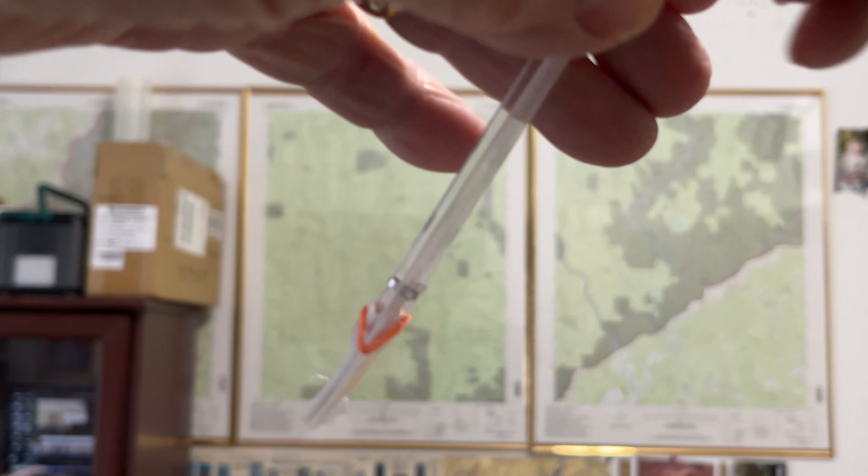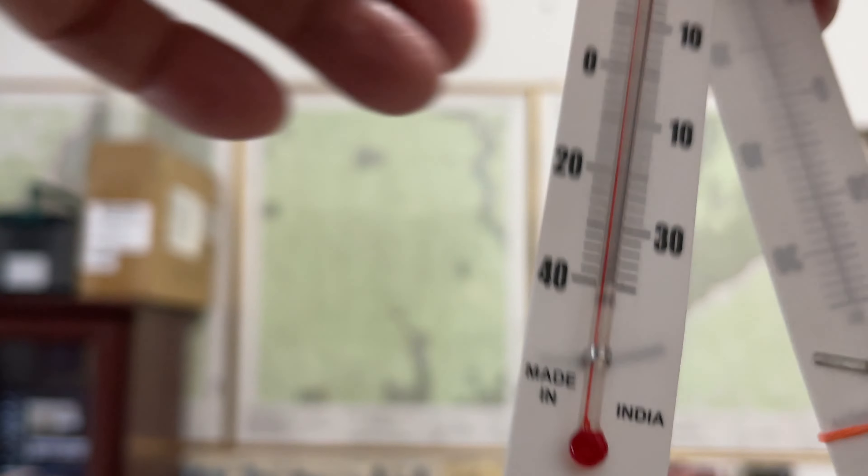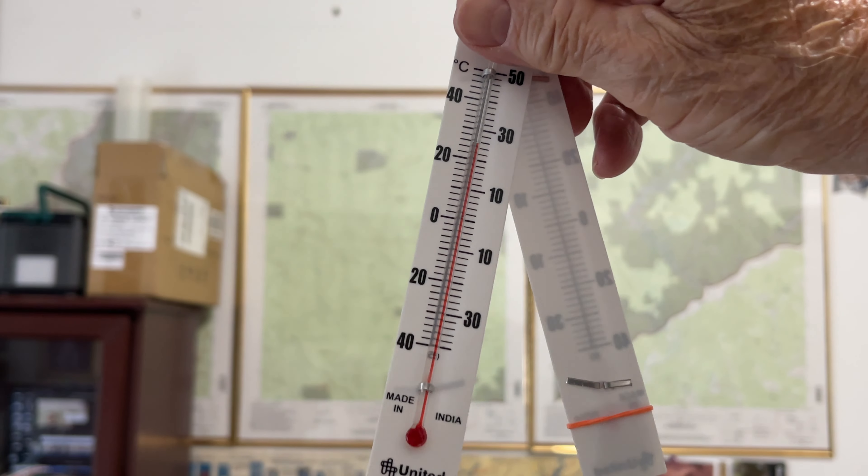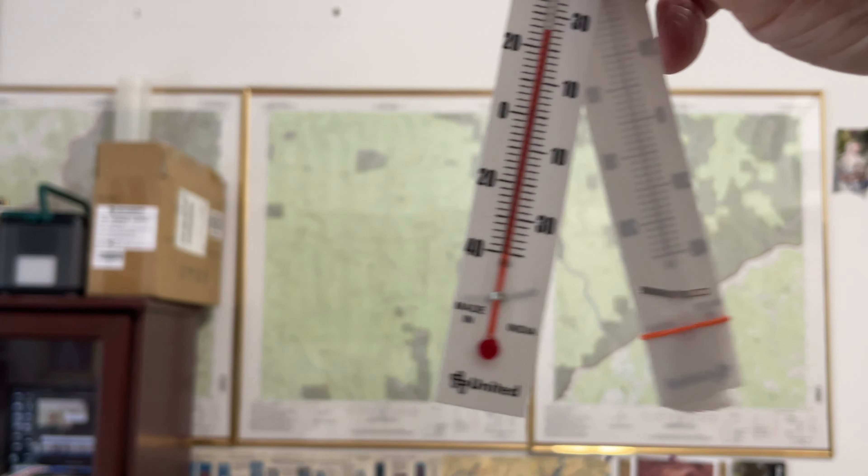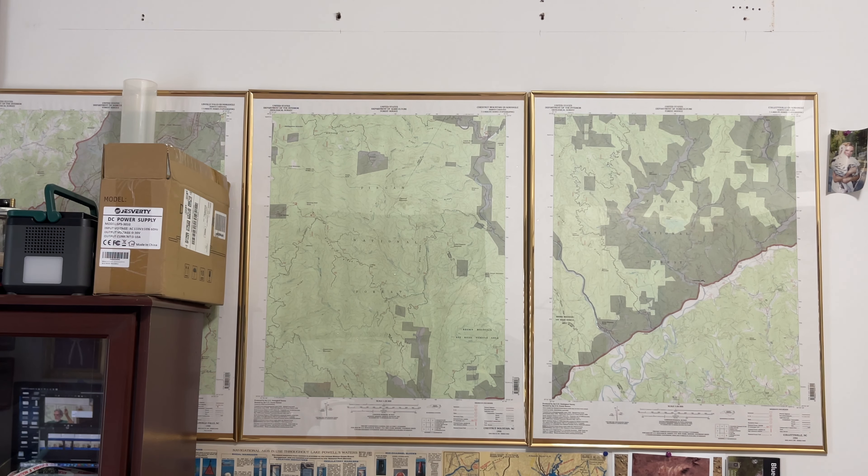Now, the dry one is still reading 24 just like before. So, we will take a look at that on the psychrometric chart and see what it says.